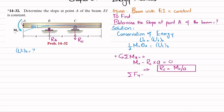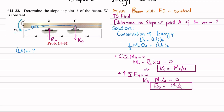Next, using the sum of forces in the y-direction equal to zero, with upward positive: RB minus RC equals zero, so RB = M0 / A as well. Both values are positive, confirming that RB is upward and RC is downward as assumed.